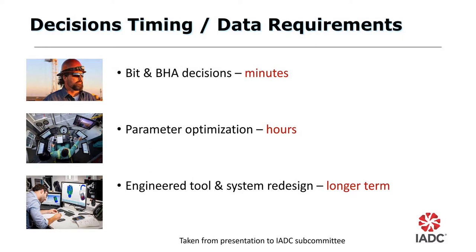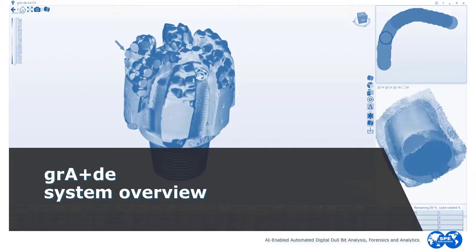When we look at the bit-related decisions made as part of the overall drilling process, we can divide them broadly into three categories. First, the decision on the next bit and BHA to run back in the hole needs to be made in a matter of minutes — certainly less than half an hour in most cases. After that, it may be possible to make changes to some operational parameters before the bit reaches bottom, a matter of hours. Lastly, more in-depth analysis and study can take place over a much longer term. Now we'll take a look at a machine-based approach to cutter damage assessment: the GRADE system.